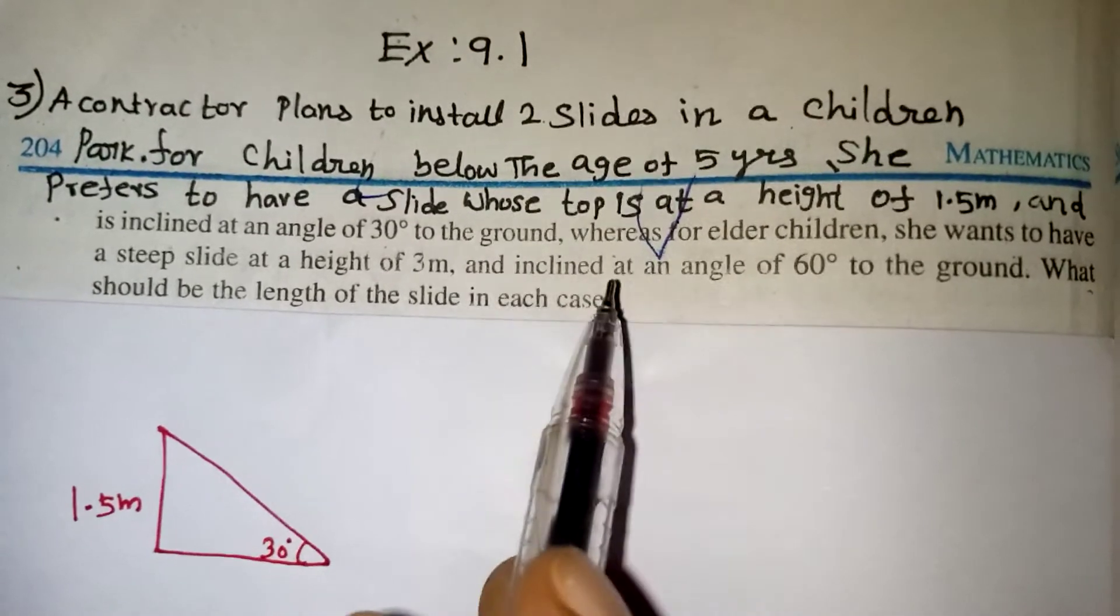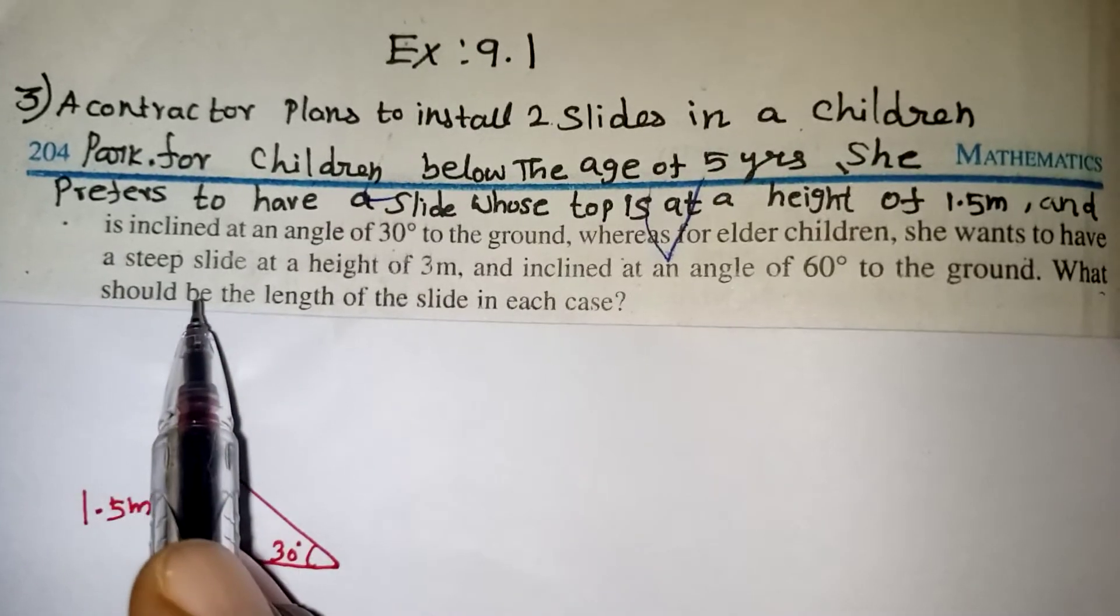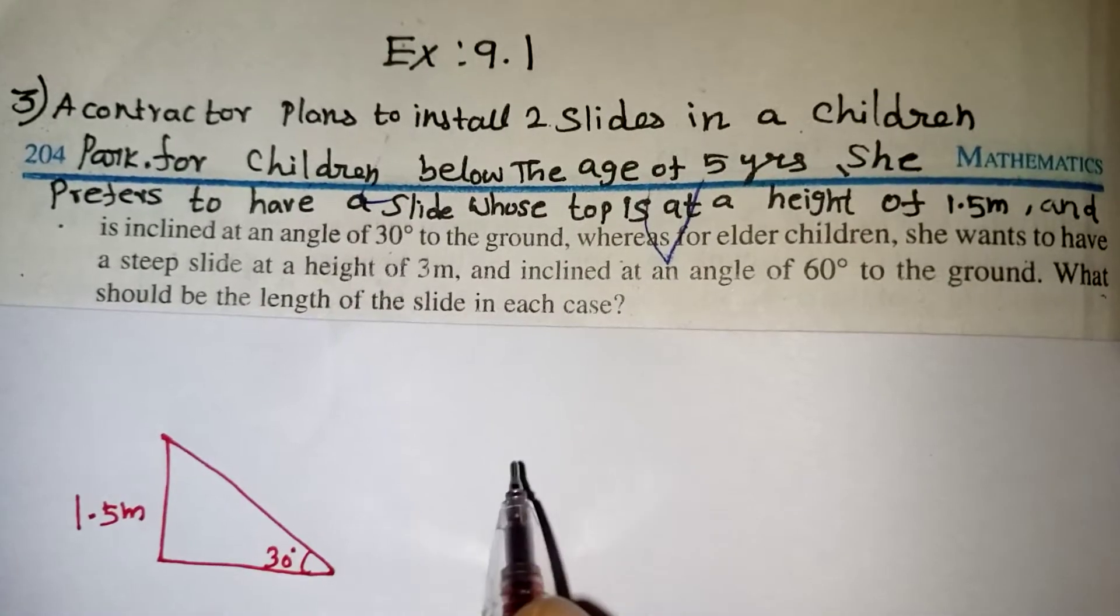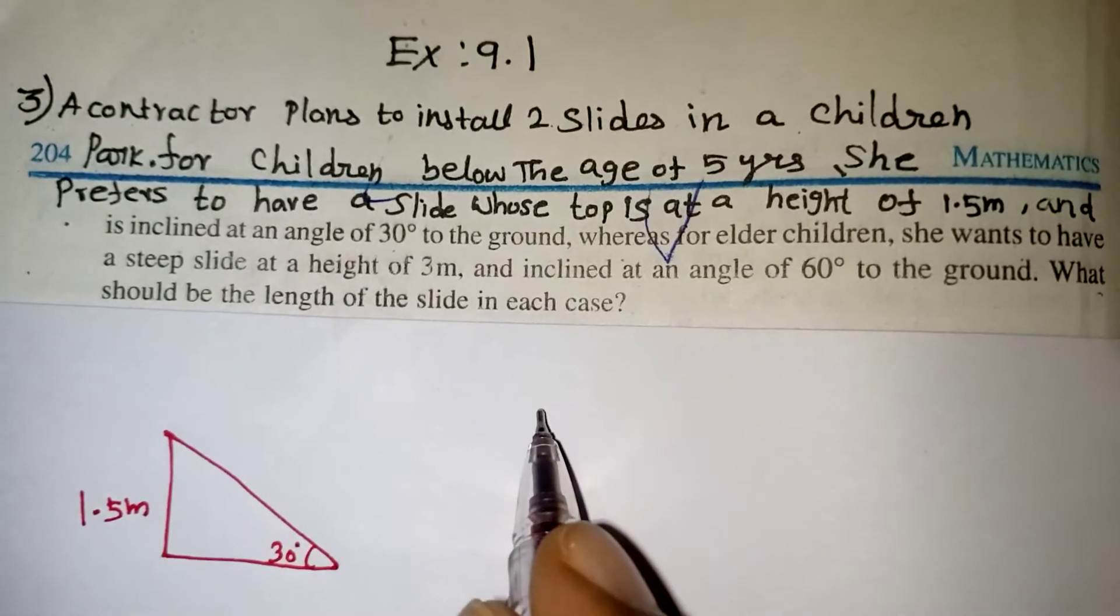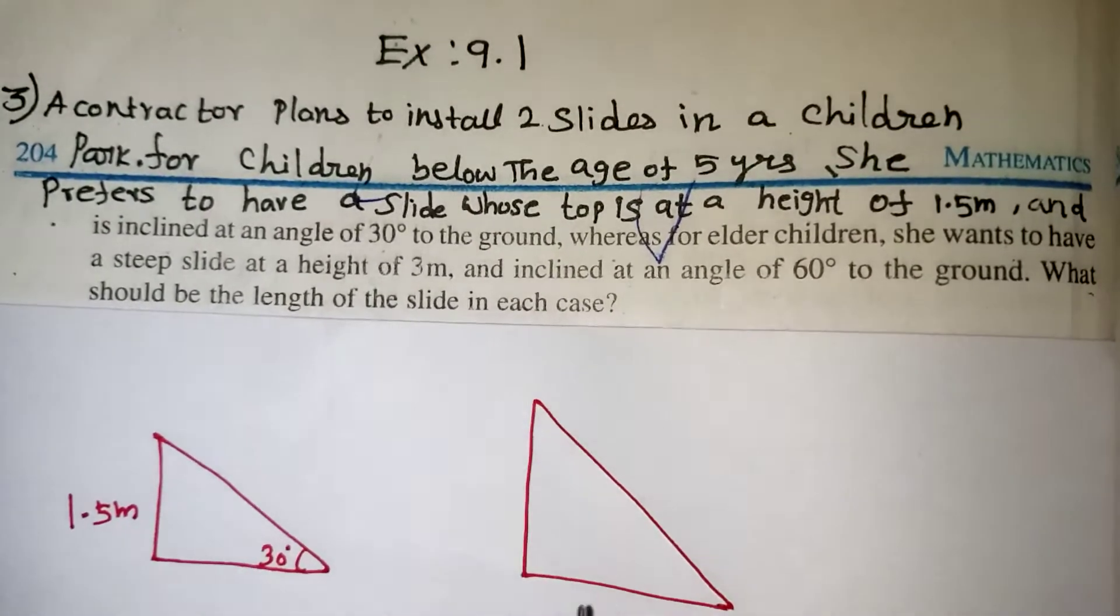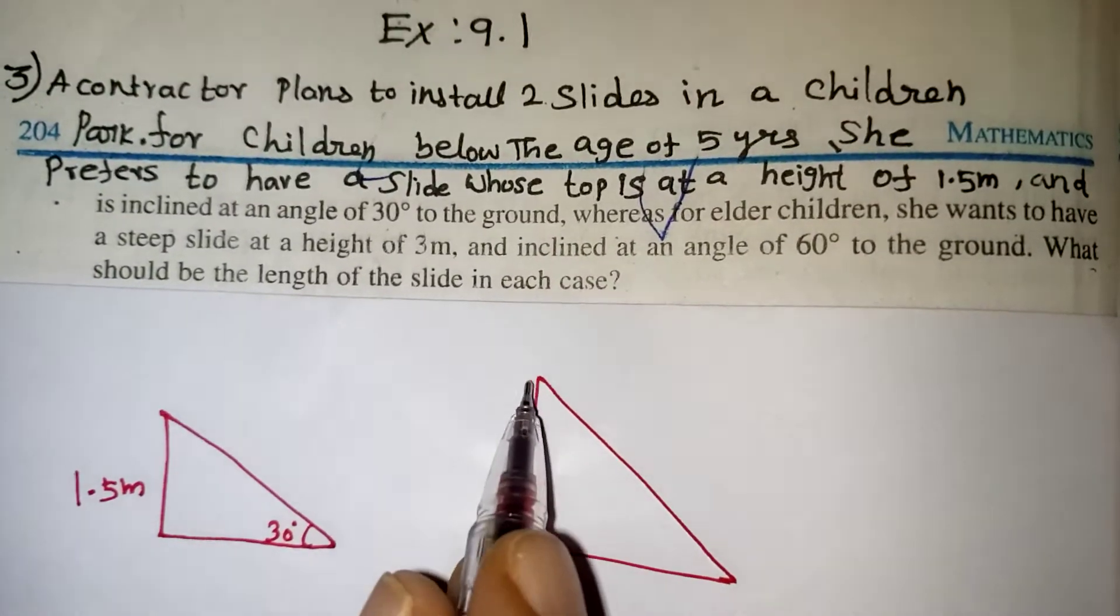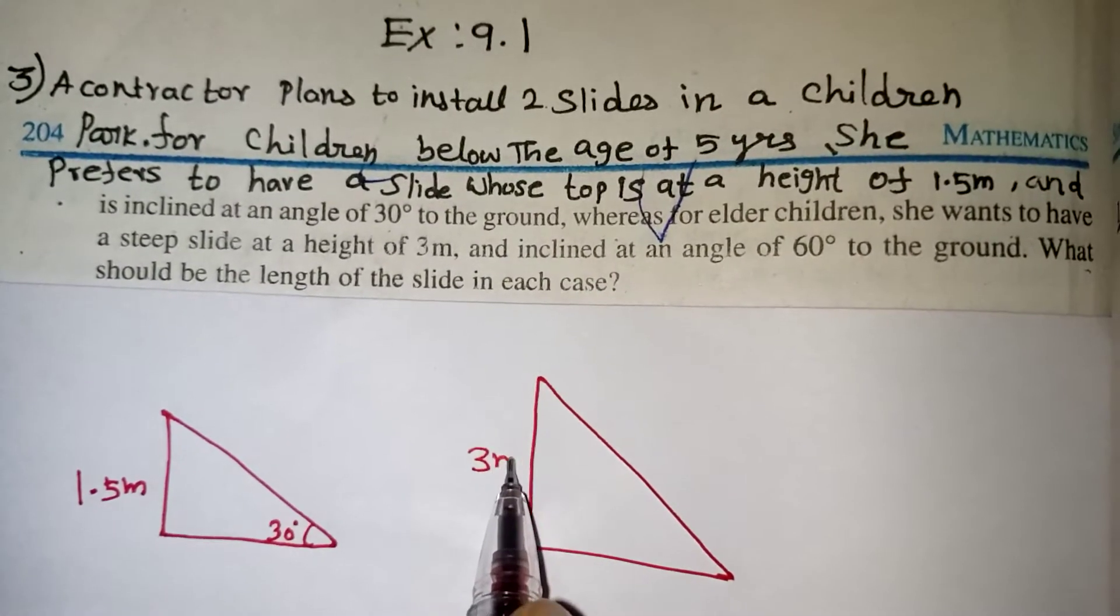Now the next statement. Whereas for elder children, she wants to have a steep slide at the height of 3 meter. This is for under 5 years. For the elder children, they want to make one more slide. That height is 3 meter from the ground. So this is our ground. The slide starts from 3 meter.